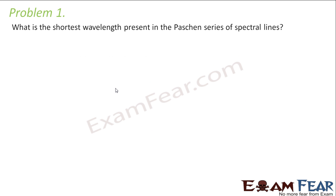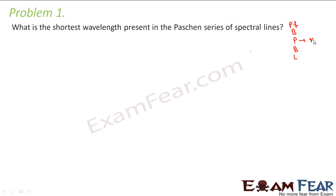It says: what is the shortest wavelength present in the Paschen series of spectral lines? The spectral series go Lyman, Balmer, Paschen, Brackett, and Pfund. Paschen corresponds to n₁ equal to 3.